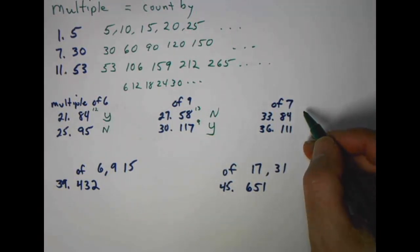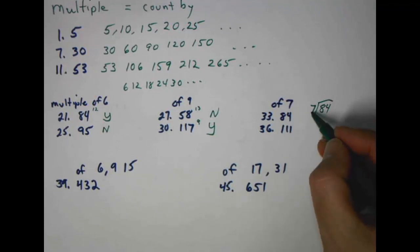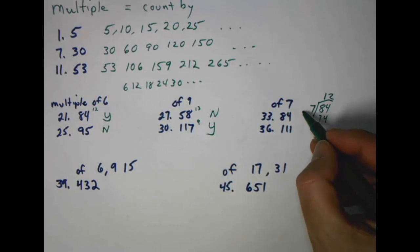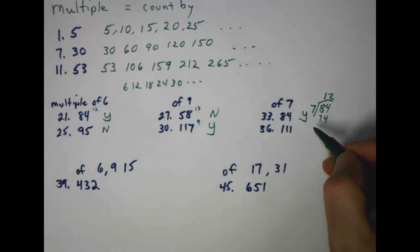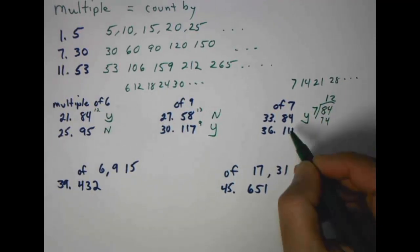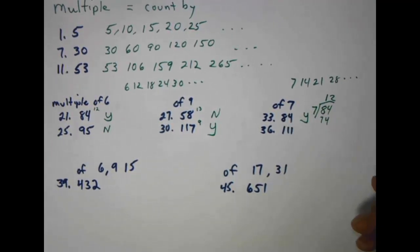Remember, we said we really didn't have a good rule for seven. So basically, we have to do these longhand or on a calculator. So we're going to take eighty-four. We're going to divide by seven. So does seven go into eight one time? Bring down the next number. Seven goes into fourteen twice. So yes, seven went into this number evenly. So it is a multiple of seven. So if we counted by seven: seven, fourteen, twenty-one, twenty-eight, and so on. Eighty-four would be on our list down here.